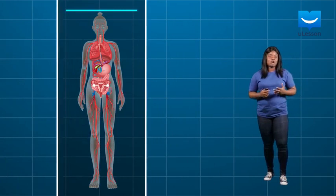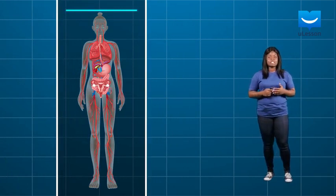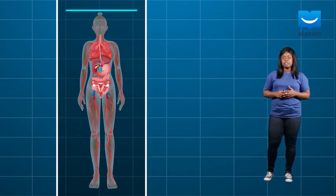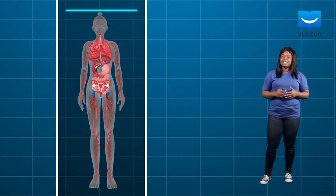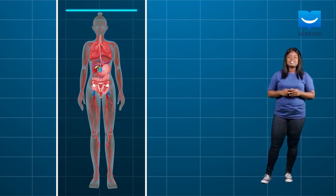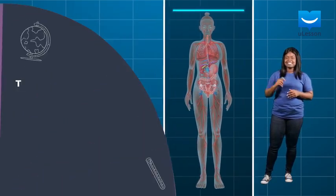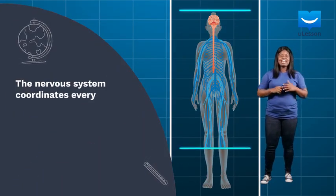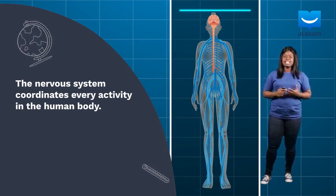Within the next couple of quests, we will explore the systems of the human body and learn how they function to keep the body processes running. Particularly, we will start with the nervous system that coordinates every single activity in the body.